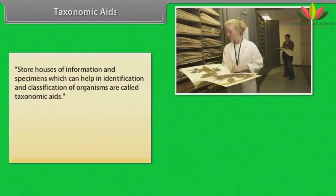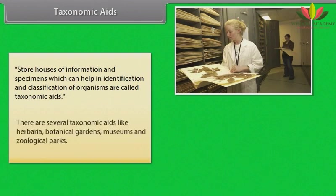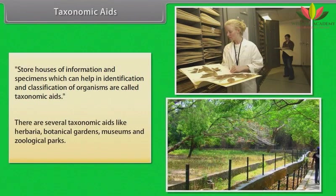Taxonomic Aids: Storehouses of information and specimens which can help in identification and classification of organisms are called taxonomic aids. There are several taxonomic aids like herbaria, botanical gardens, museums, and zoological parks.